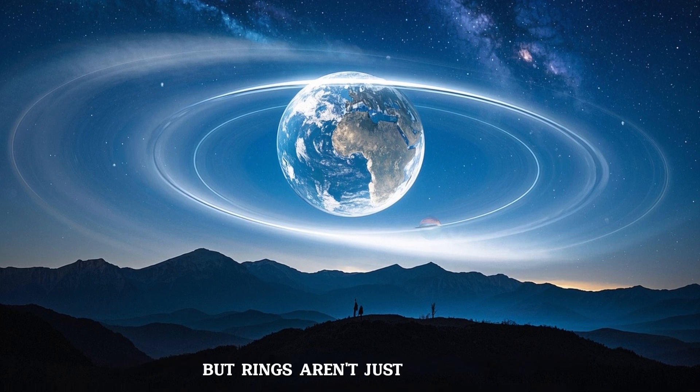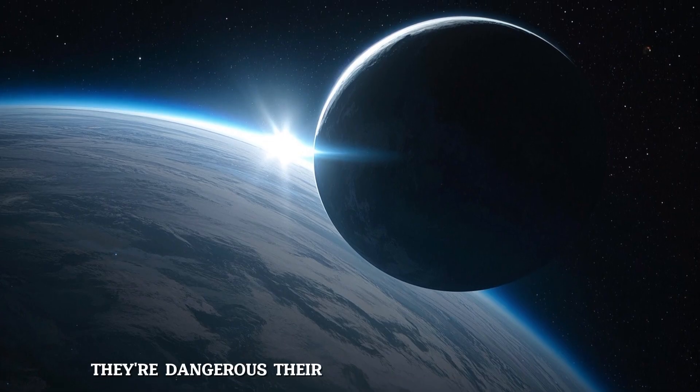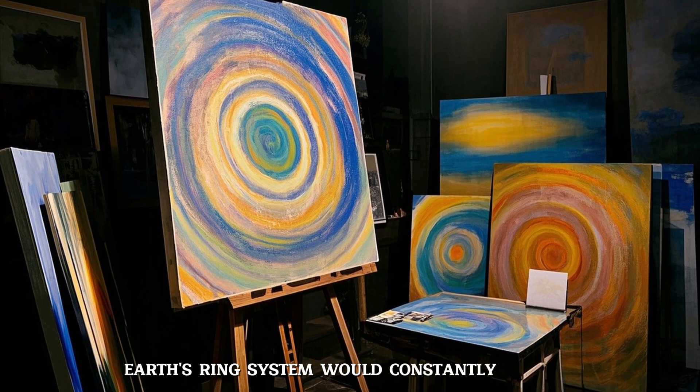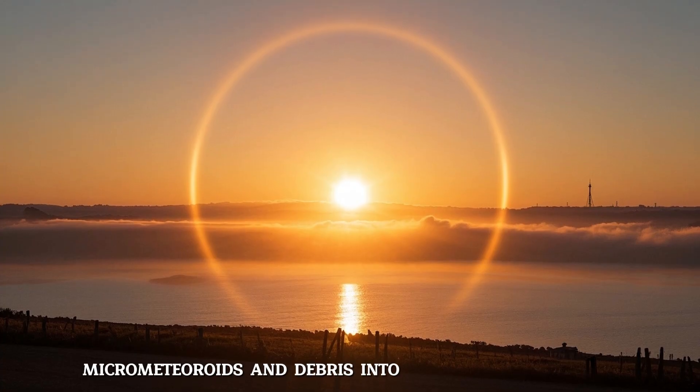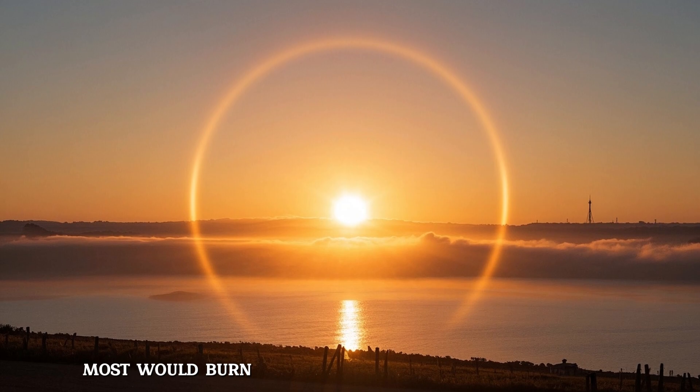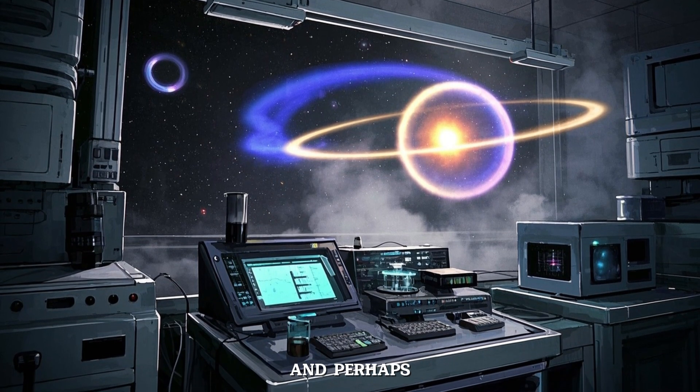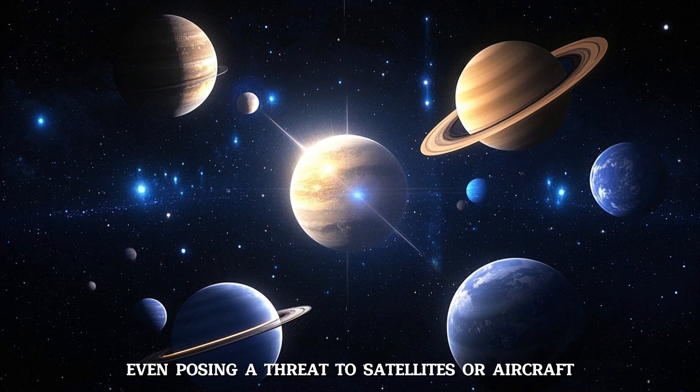But rings aren't just beautiful. They're dangerous. Their presence would have serious scientific consequences. For starters, Earth's ring system would constantly shower micrometeorites and debris into the upper atmosphere. Most would burn up, but some might reach the surface, increasing meteor showers, and perhaps even posing a threat to satellites or aircraft.